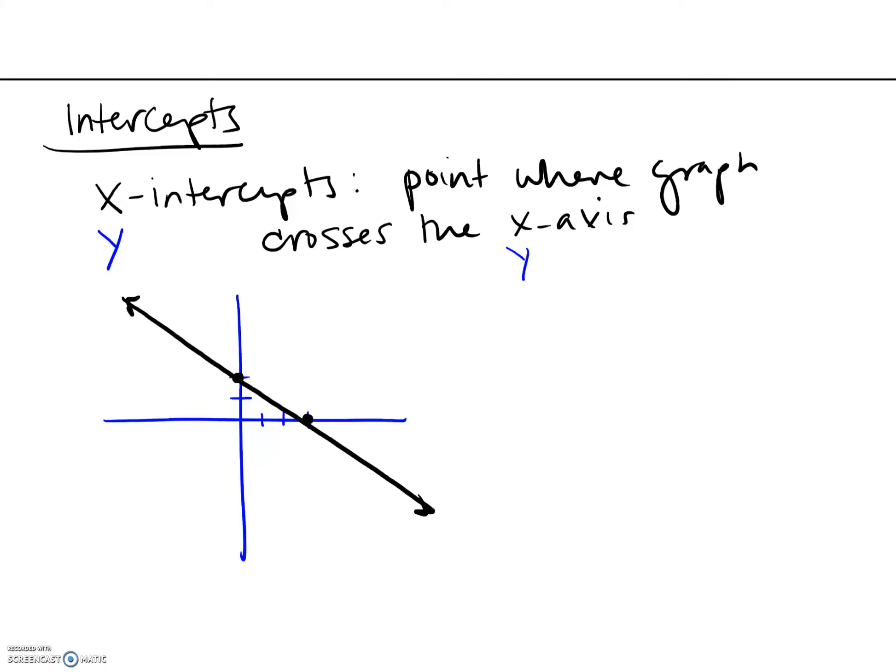So if we look at that graph from before, our 2x plus 3y is equal to 6. For this graph, we had an x-intercept where this crossed the x-axis. It's this one. And a y-intercept where it crossed the y-axis.